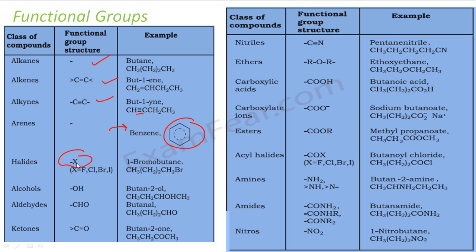Then we have halides — this can be any halogen: chlorine, bromine, iodine. When attached to an organic compound, it gives different properties. For example, bromobutane — you can also have chlorobutane and iodobutane. Alcohols — for example, butanol. Aldehydes and ketones. We also have nitriles (CN with triple bond), ethers (ROR), carboxylic acid (COH), carboxylate ions (CO-), esters (COR), acyl halides (COX), amines (NH2), and nitros.